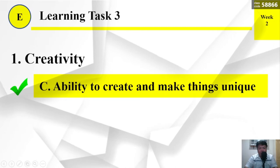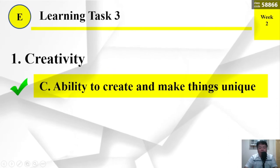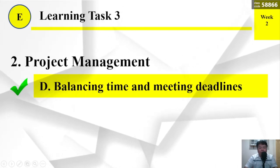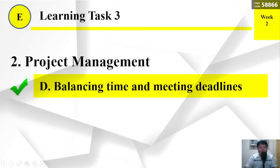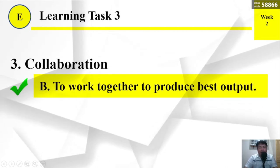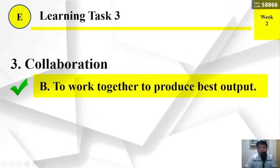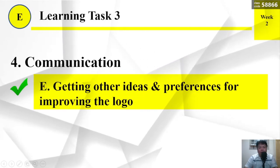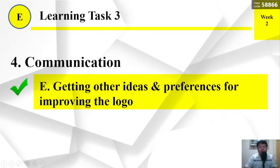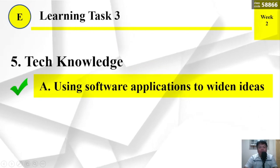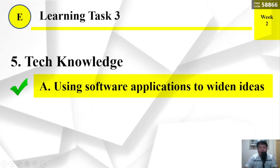Here are the answers. Number 1 — Creativity: the answer is C, ability to create and make things unique. Number 2 — Project management: the answer is D, balancing time and meeting deadlines. Number 3 — Collaboration: the correct answer is B, to work together and produce best output. Number 4 — Communication: the answer is E, getting other ideas and preferences for improving the logo. Number 5 — Tech knowledge: the answer is A, using software applications to widen ideas.